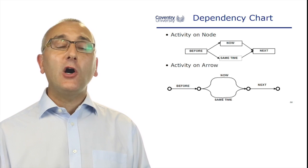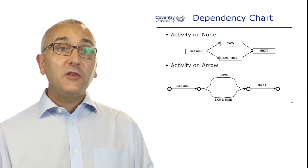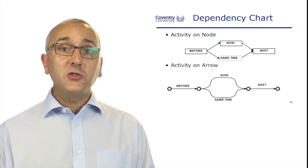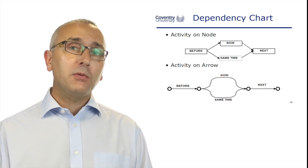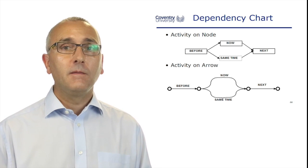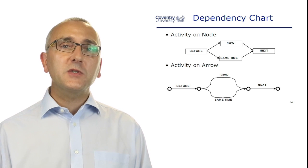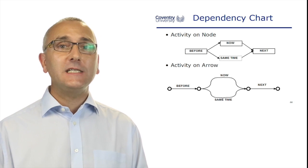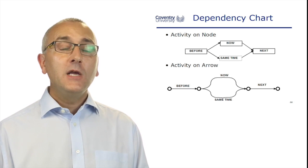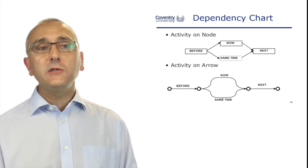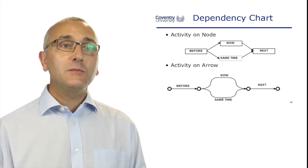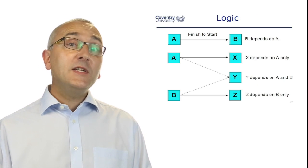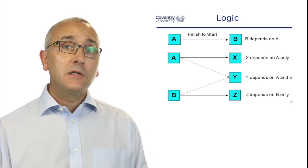There's the activity on node method, where the tasks and activities from the work breakdown structures are written on nodes or boxes. That's the top of this slide, and that's the method we'll use in this module. But sometimes in textbooks you'll see activity on arrow, where the task or activity is written on the arrow and they're connected with boxes. We're going to use activity on node (AON). Sometimes you see AOA, activity on arrow.